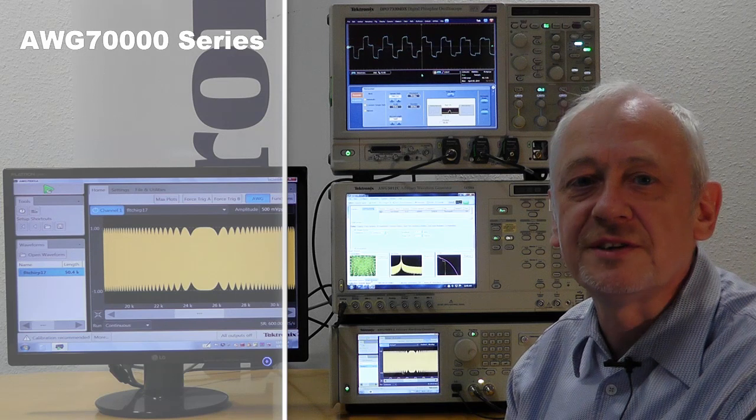The arbitrary generator 70,000 series from Tektronix is capable of up to 20 gigahertz of analog bandwidth and 50 giga samples of maximum sample rate.